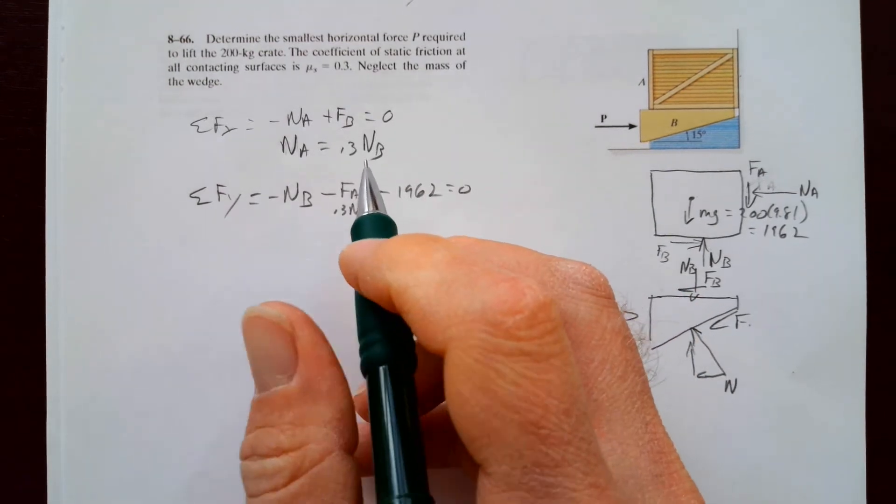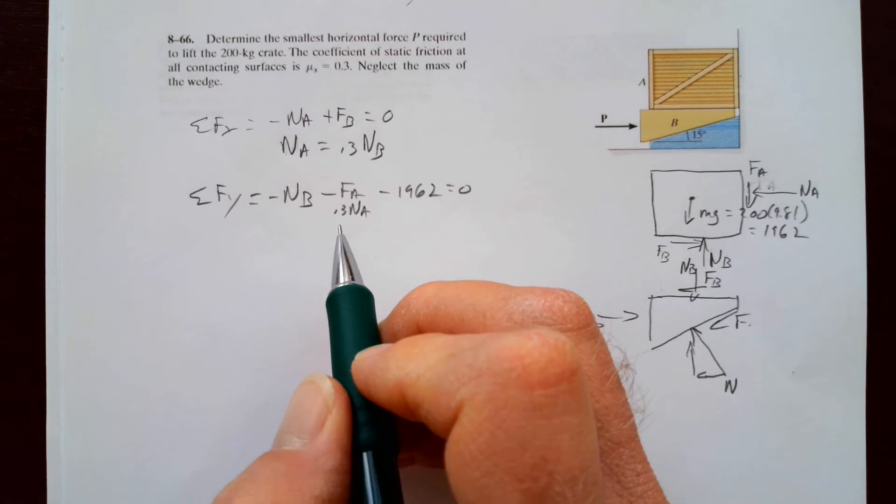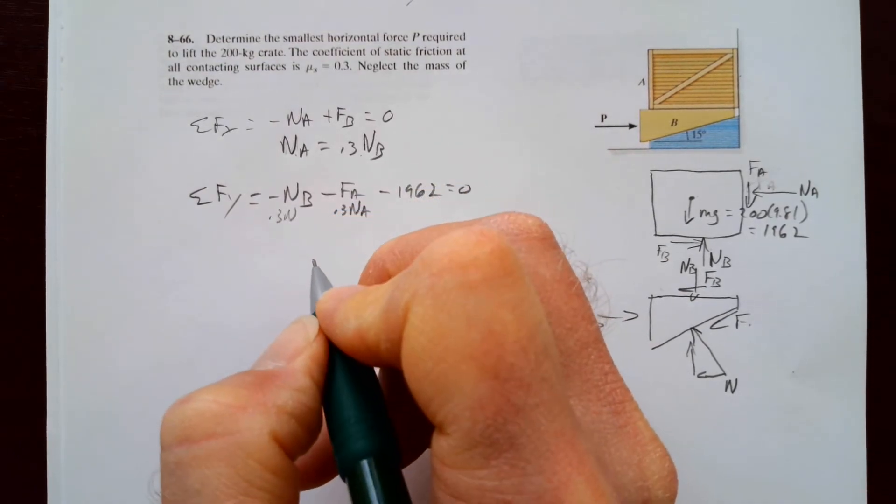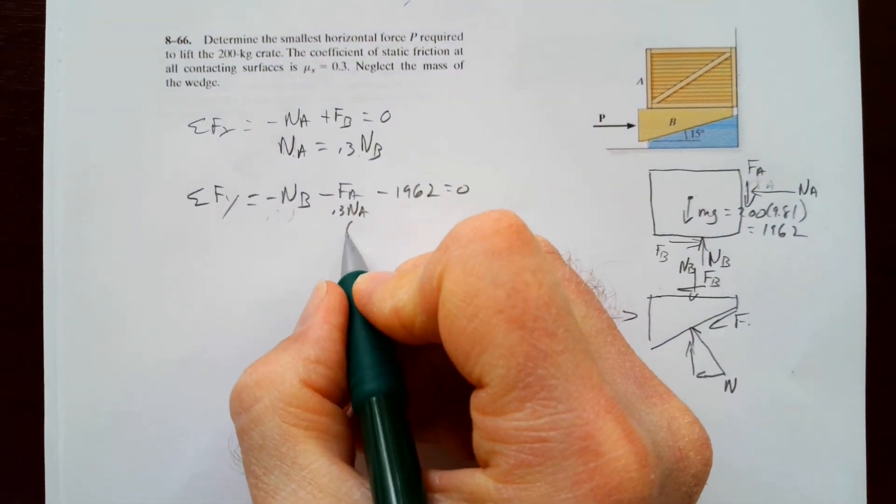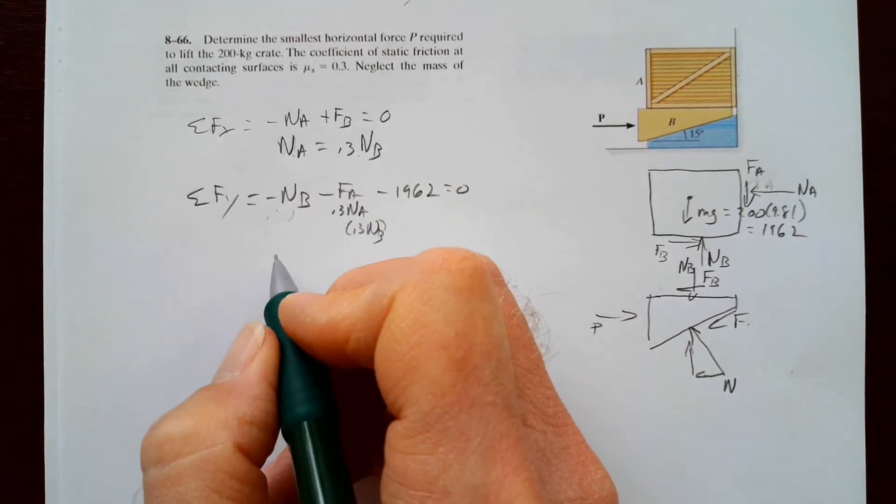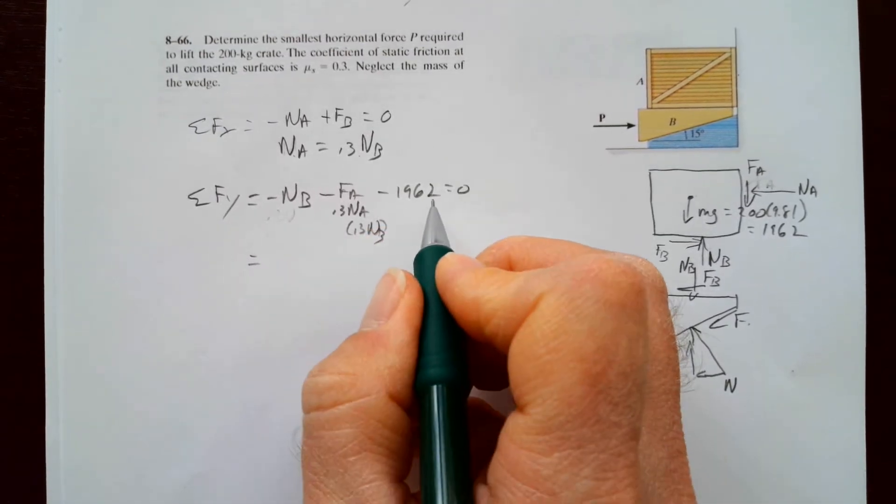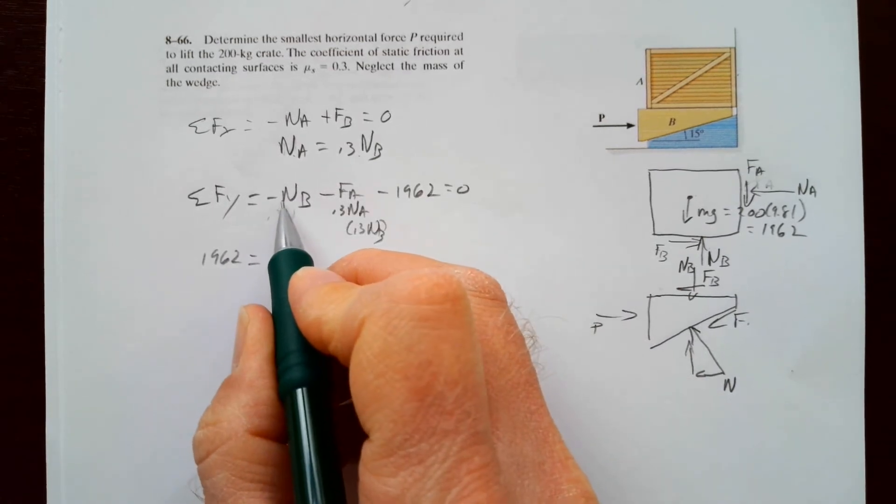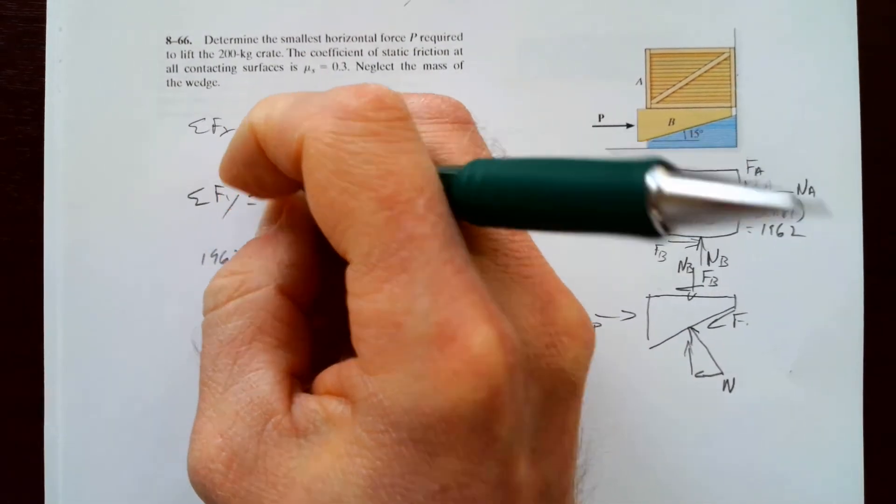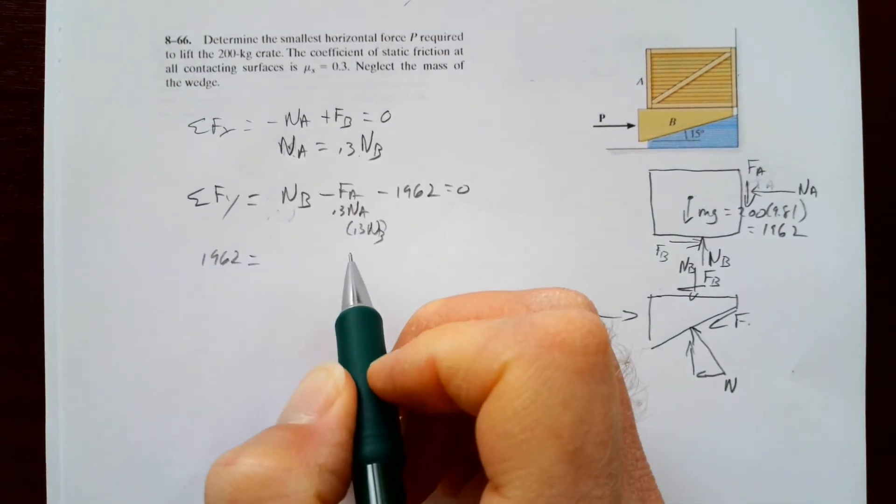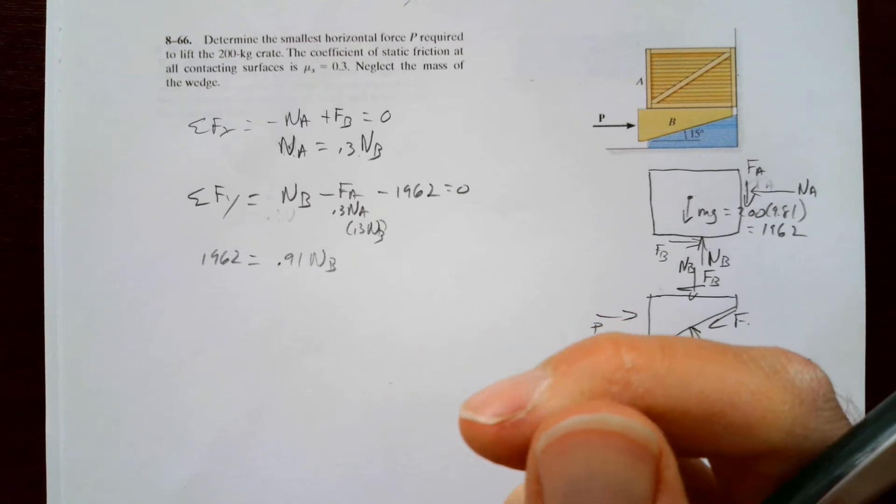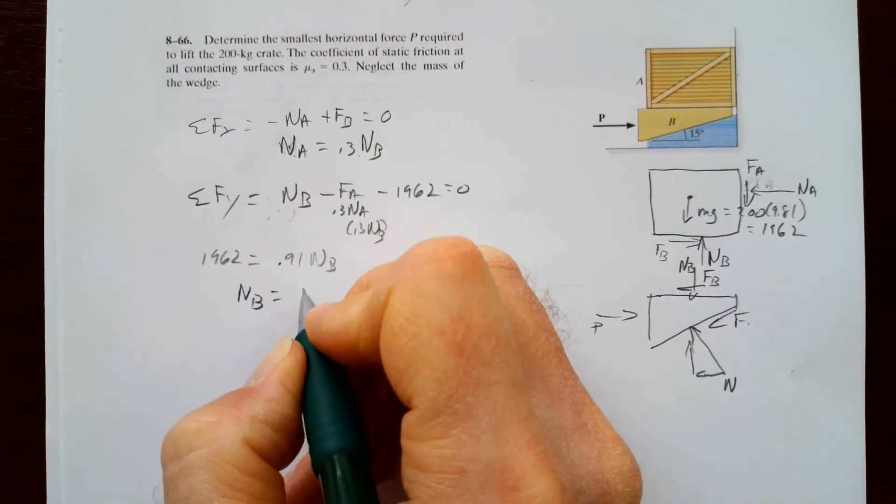So now we have, let's solve this one. NA is 0.3NB. So we can put 0.3NB. So FA is 0.3NB. If we move the 1962 over, we've got 1NB minus, but that NB should be negative? That NB is up. My bad. So 1NB minus 0.3 times 0.3 is 0.09NB. So we've got 0.91NB equals 1962. So NB equals 2156.